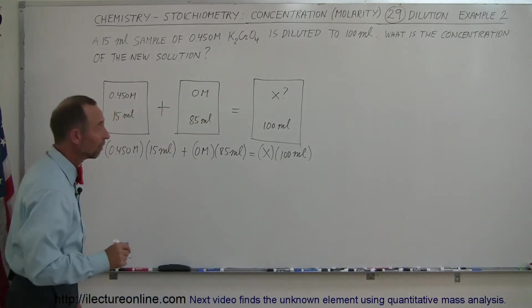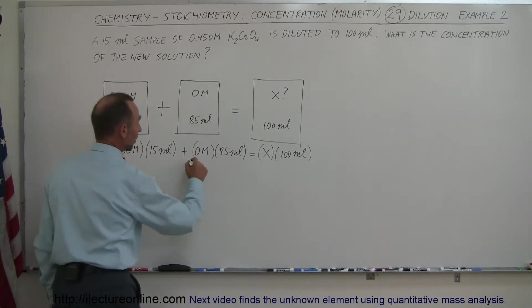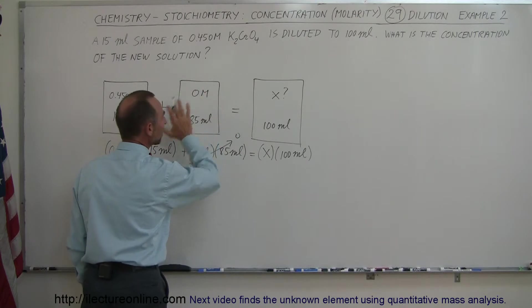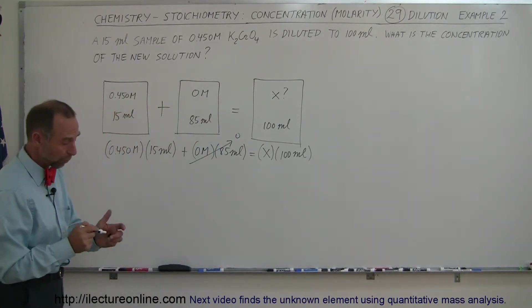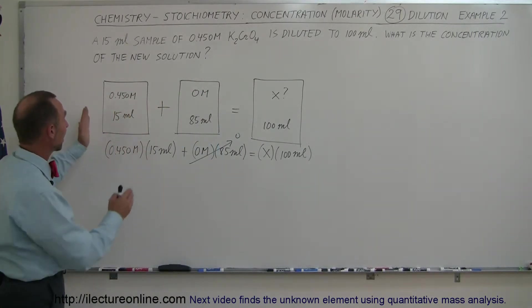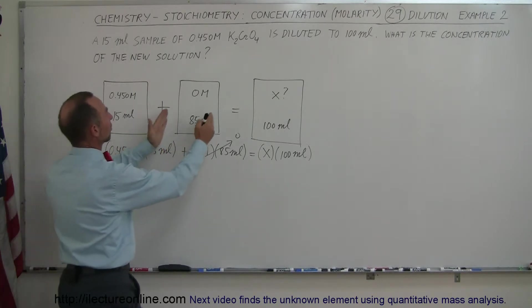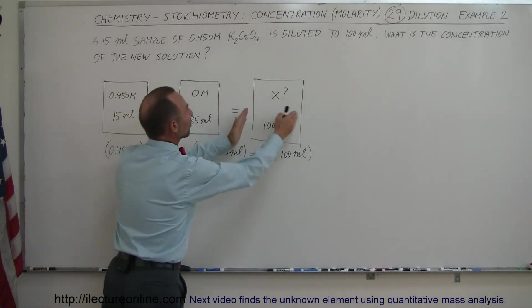And now we have to solve that algebraically for x. Of course, we realize that this goes to 0 because this has no potassium chromate in it. In essence, what we're doing is we're keeping track of the amount of potassium chromate here, the amount of potassium chromate here, and the amount of potassium chromate here.